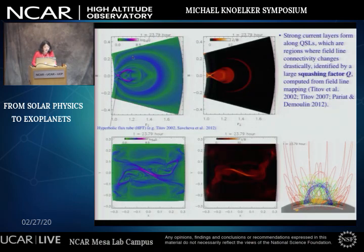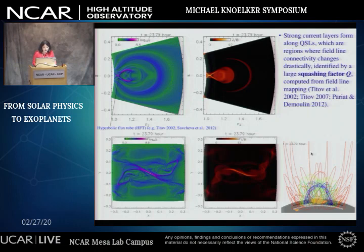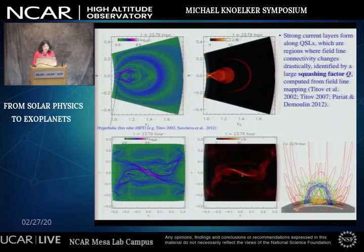Here is a comparison of the computed Q factor (squashing factor) and the current density found in the simulation, shown for two cross-sections: a vertical central cross-section and a horizontal cross-section through the current layer. We see that strong current layers do indeed form along the QSLs, where field connectivity undergoes a significant transition. Also, the current layer that forms has a sigmoid shape for this left-handed twisted flux rope, which may explain the tendency to observe these X-ray sigmoids in pre-eruption active regions.